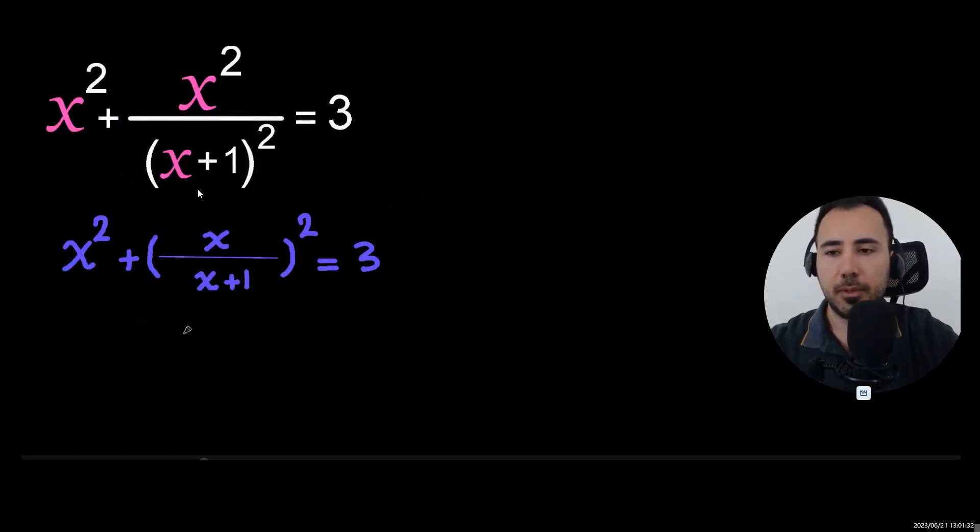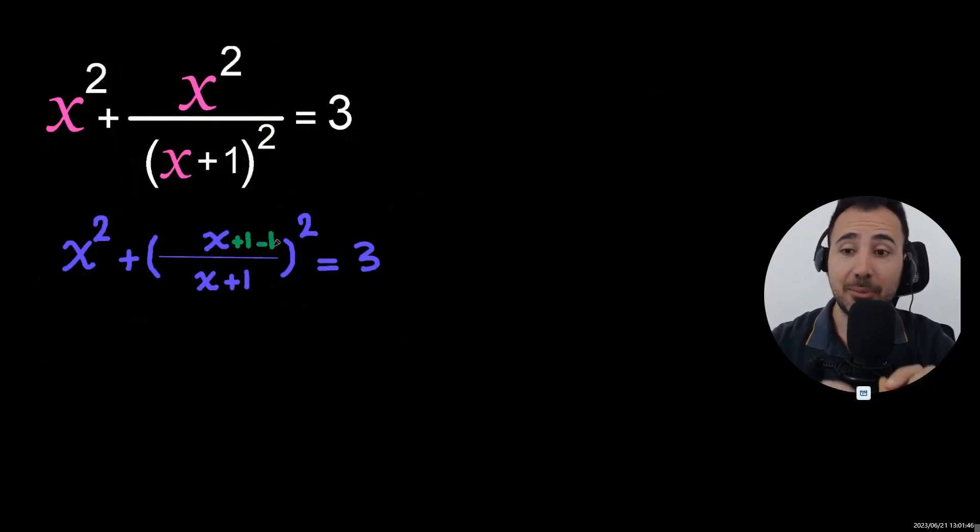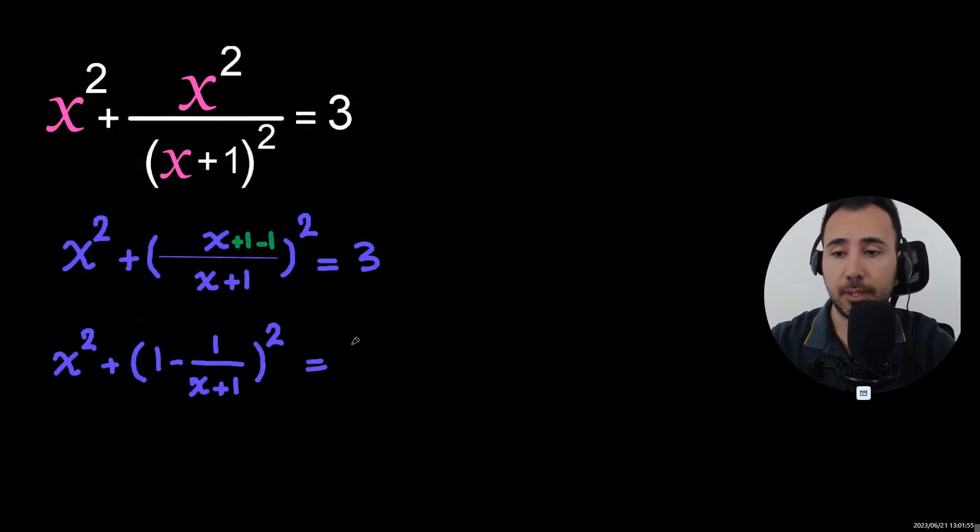So now, how do you simplify this, x over x plus 1? One way would be to divide them like long division, or we could add plus 1 and negative 1. So now, with this, we could separate them into two terms.